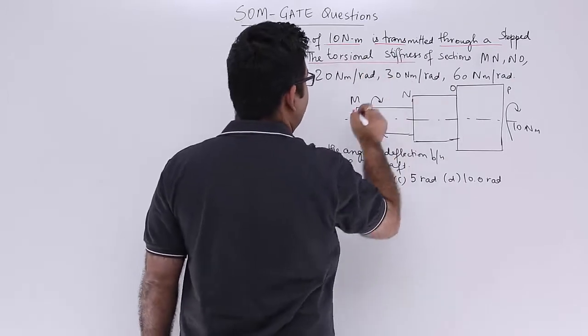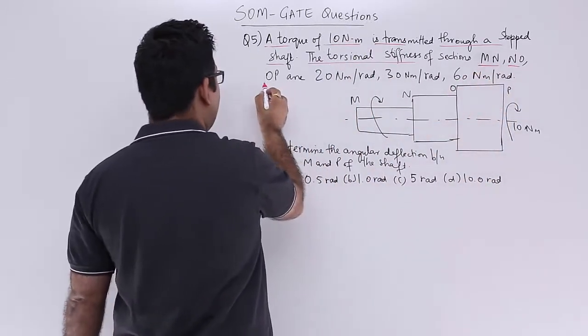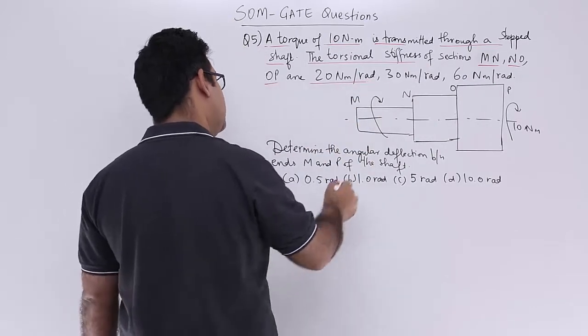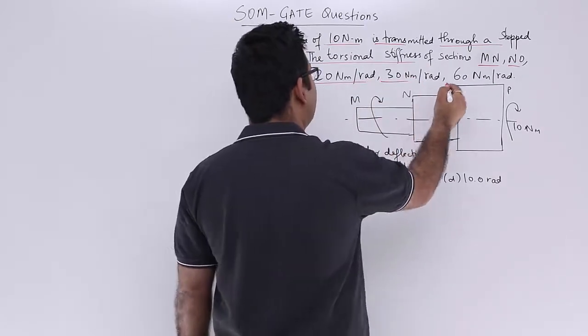The torsional stiffness of sections MN, NO and OP are 20 Nm per radian, 30 and then 60 respectively.